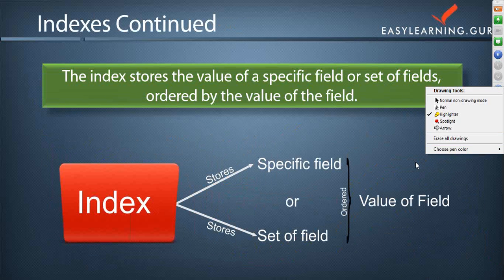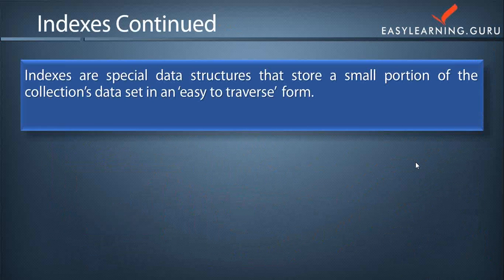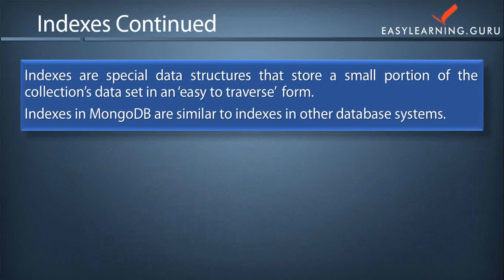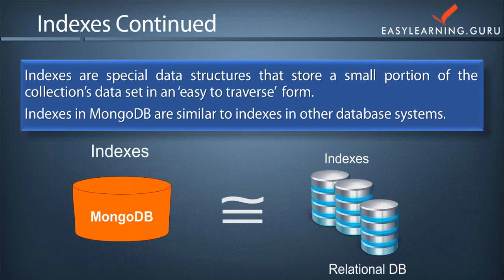Indexes are special data structures that store a small portion of the collection's data set in an easy-to-traverse form. MongoDB's indexes work almost identically to typical relational database indexes. Use of indexes in the database makes a great difference in query times, because indexes do not let MongoDB scan the whole database. As the collection size increases, use of indexes in databases becomes much more efficient. An index keeps all of its values in a sorted order, making sorting documents by the index key much faster.